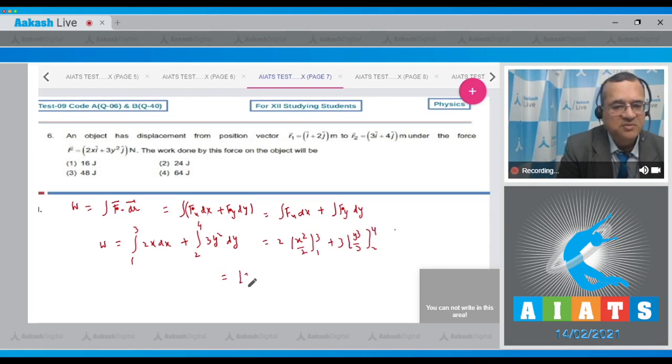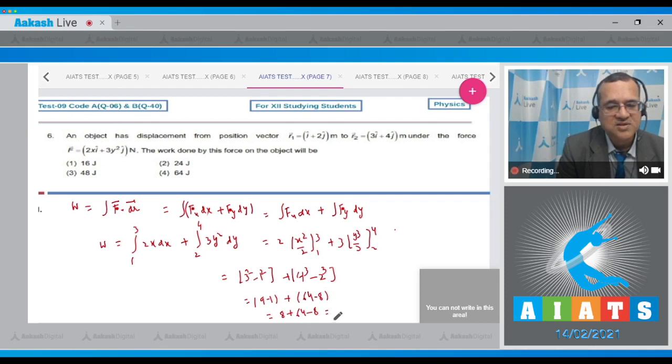So this becomes 3² minus 1² plus 4³ minus 2³. This is 9 minus 1 plus 64 minus 8. So this becomes 8 plus 64 minus 8 which equals 64 joule. So the correct option is answer number 4.